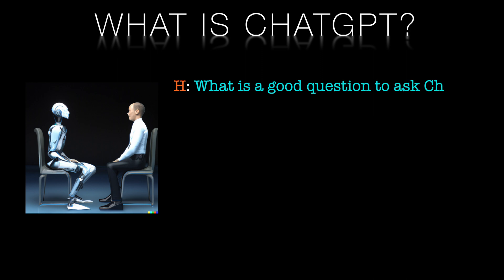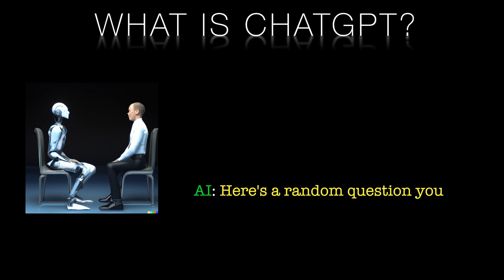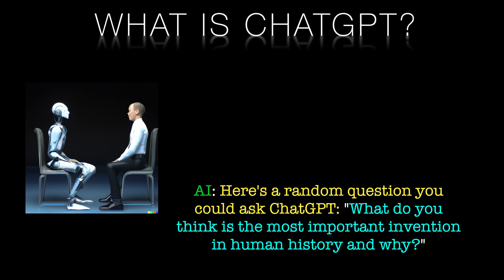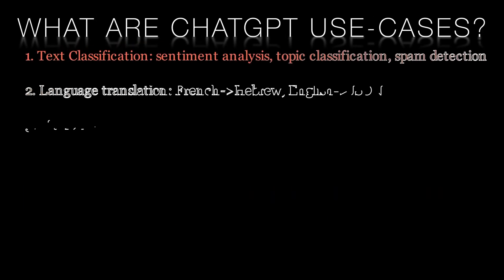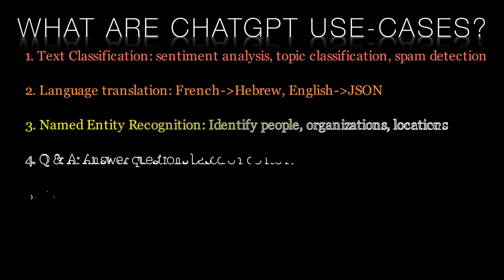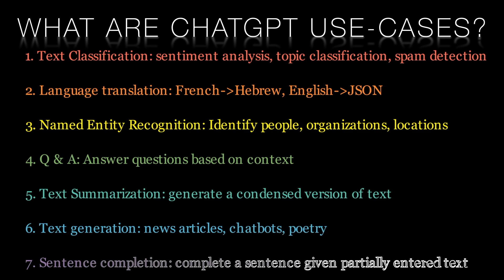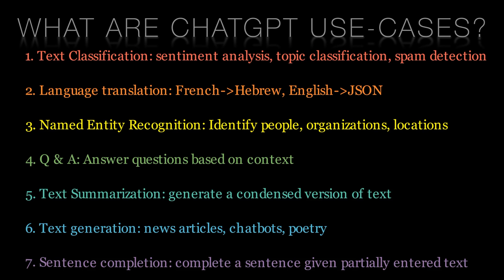Chat-GPT is another AI chatbot that uses the same underlying GPT technology, but it is primarily focused on conversational AI. Chat-GPT is designed to have conversations with users and generate natural sounding responses based on the conversation's context. Chat-GPT is not autonomous and requires the user to input text to generate responses.